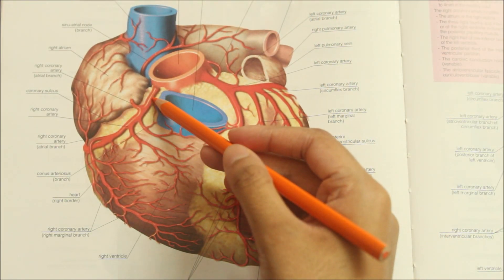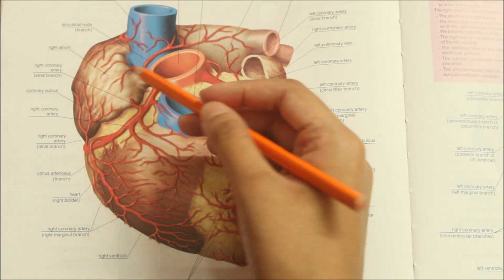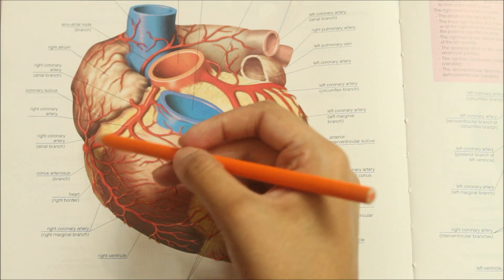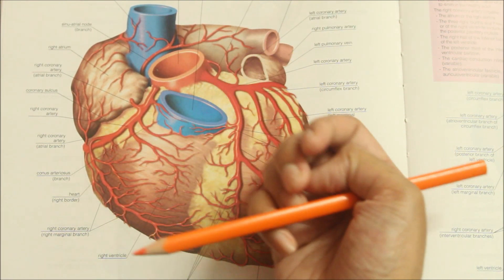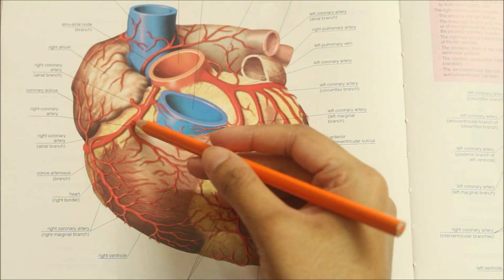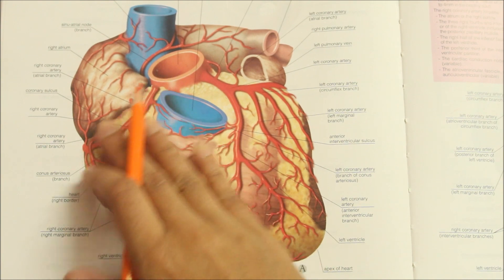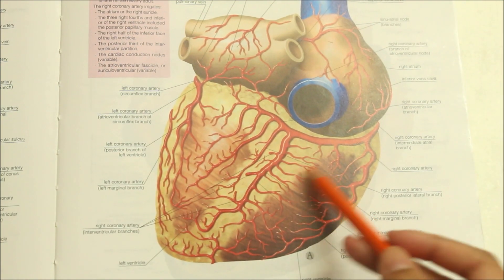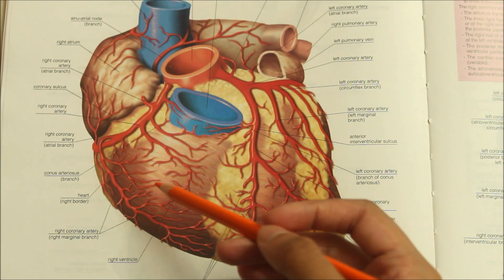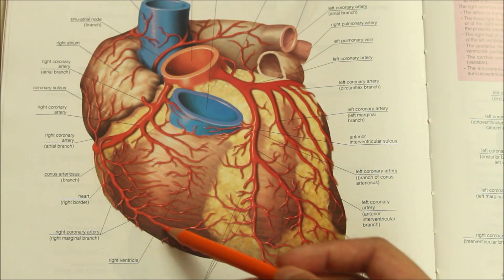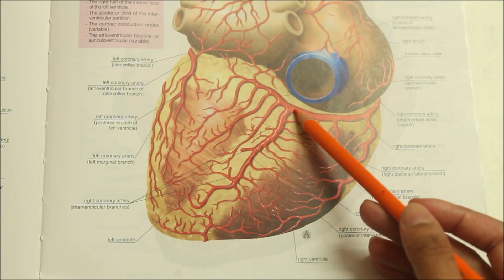Now let's look at the branches of the right coronary artery. First, there is the atrial branch — there is one atrial branch here and another atrial branch here — with anterior, posterior, and lateral atrial branches. Second is the ventricular branch, which has an anterior group for the sternocostal surface and a posterior group that traverses the diaphragmatic surface. After the atrial and ventricular branches, there is the right marginal artery. The final branch is the posterior interventricular branch.